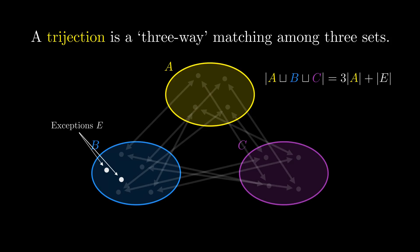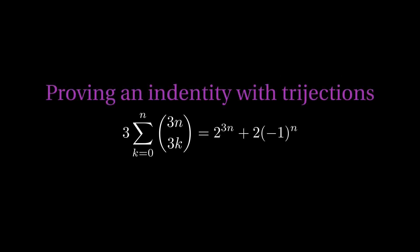We'll look at two identities that we'll prove using trijections. First up, this one. Three times the sum of 3n choose 3k is 2 to the 3n plus 2 times minus 1 to the n.